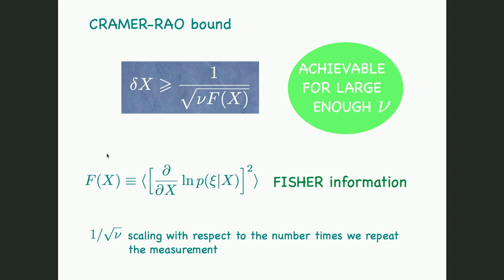As the number of measurements increases, this lower bound decreases like 1/sqrt(nu). The bound is achievable for sufficiently large nu: there exist optimal estimation strategies based on maximum likelihood procedures that construct an estimator that actually achieves this scaling. This is the best precision you can hope to achieve — you cannot determine x more precisely than that.